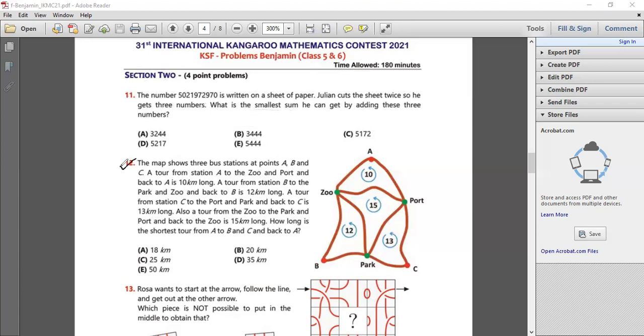Now let's go to question number 12. The map shows three bus stations at point A, B and C and a tour from station A to the zoo and back is 12 kilometers and so on and so forth.